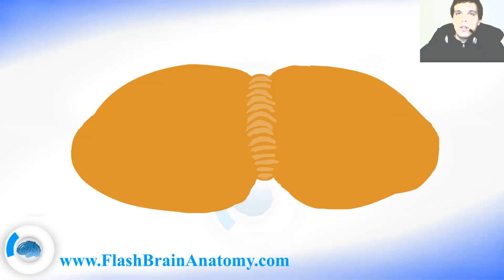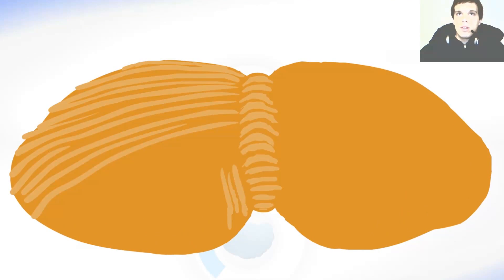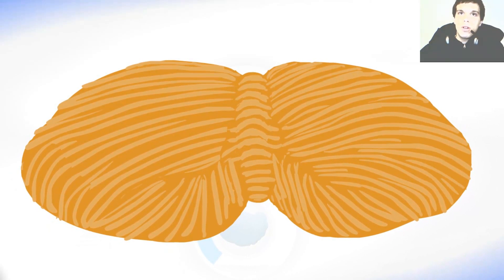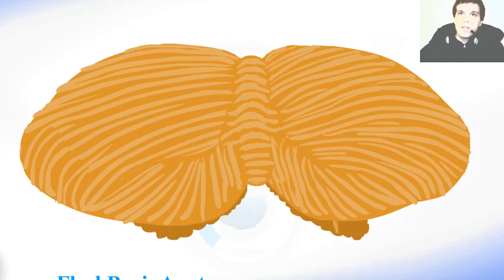In this video I will draw the cerebellum from the caudal point of view. First we can see the vermis over here and the hemispheres lateral. You can also notice the flocculus.